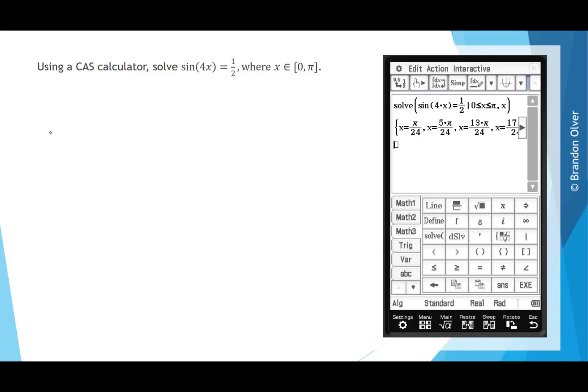The 4 solutions from the CAS calculator were x = π/24, x = 5π/24, x = 13π/24, and x = 17π/24. So they are the 4 exact solutions to this equation.